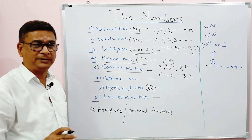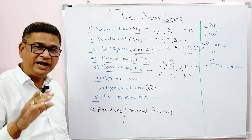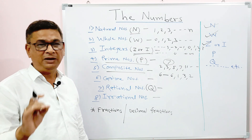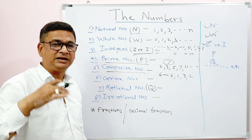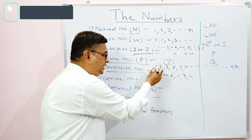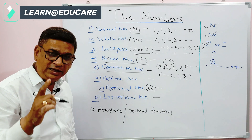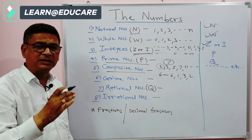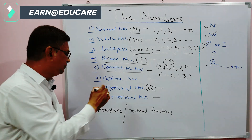Remember: 1 is neither a prime number nor a composite number — this is very important. All prime numbers are greater than 1. One more important point: 2 is the only even number which is a prime number; otherwise, all prime numbers are odd numbers.